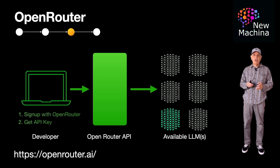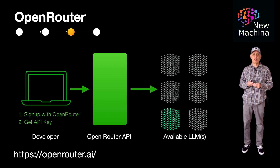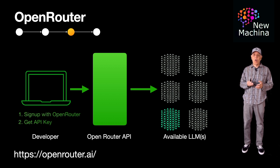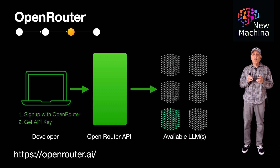So if you're considering Open Router, I wanted to share some pros and cons I see with this service. On the pros side of the ledger, Open Router is ideal for teams that need multi-model flexibility, quick integration, and cost control, especially when experimenting with different models or avoiding vendor lock-in.